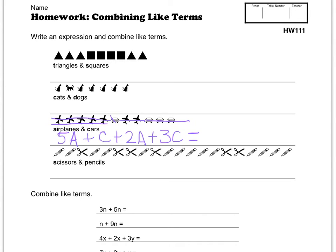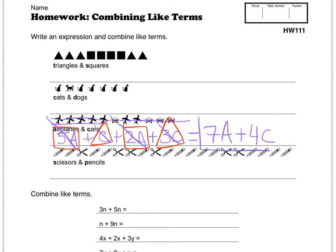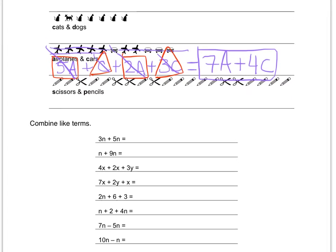I wrote the expression. Now I need to combine like terms. I really like to use the shape method, so I'm going to put boxes around all the airplane parts and triangles around all the parts that have the letter C. Combining boxes with boxes: 5A plus 2A equals 7A. Plus C plus 3C makes 4C. There's my answer — I box it in and move on.